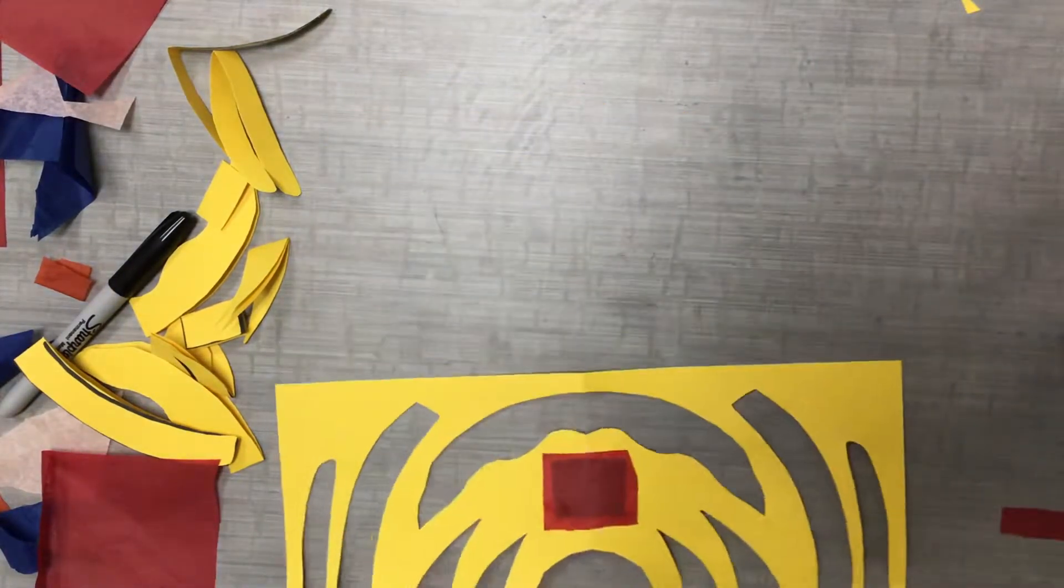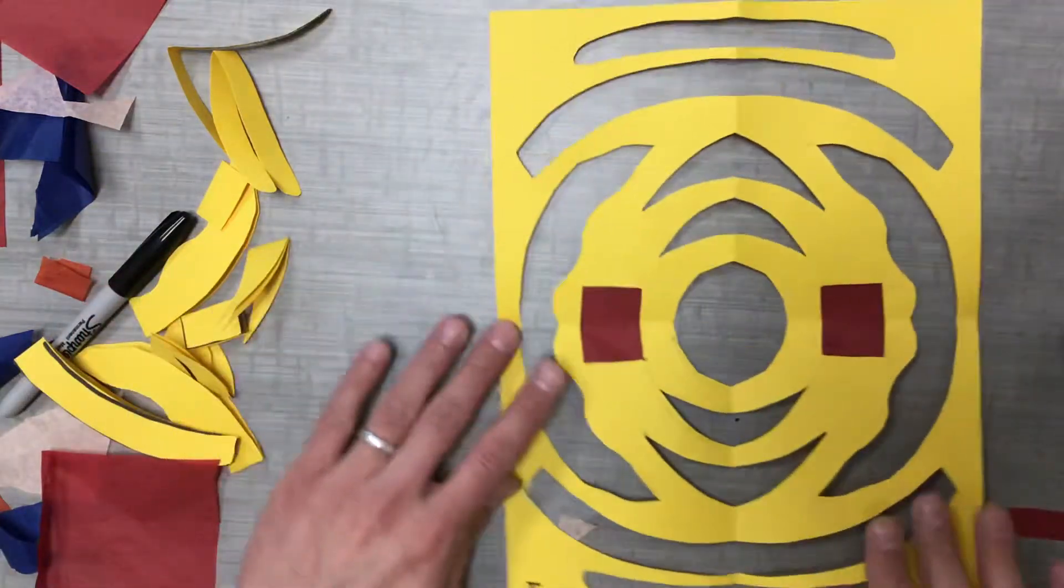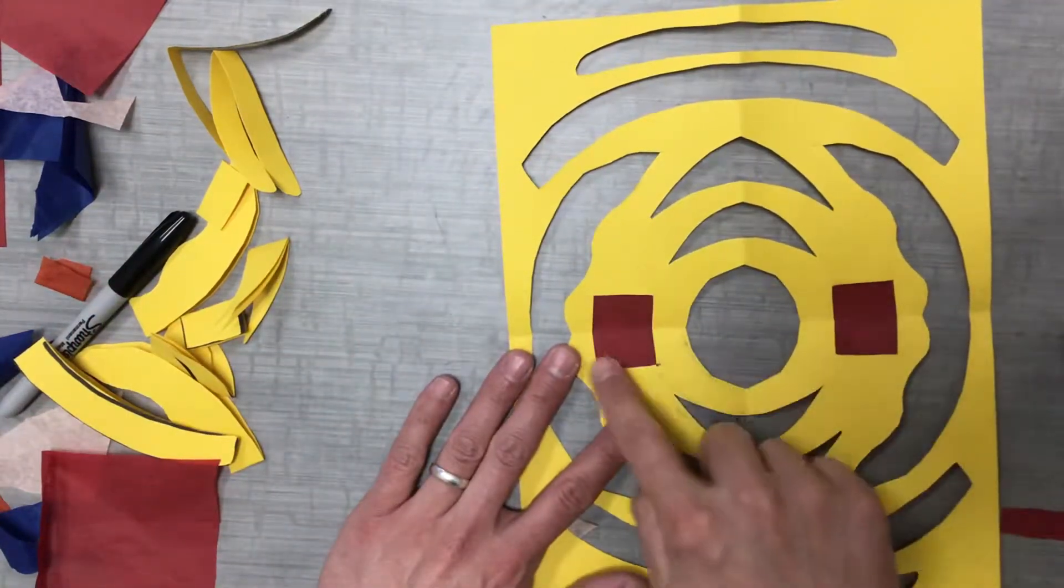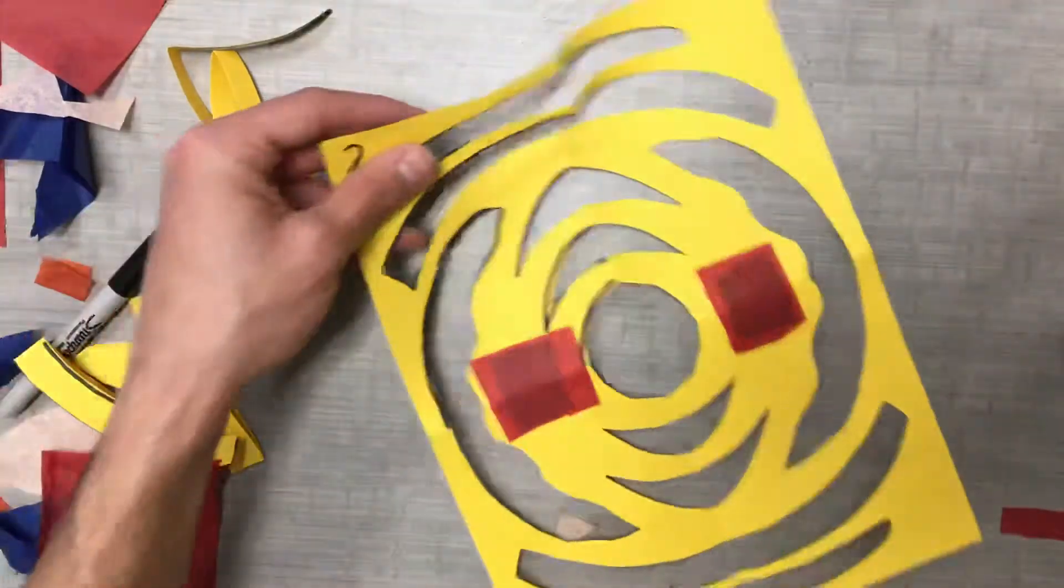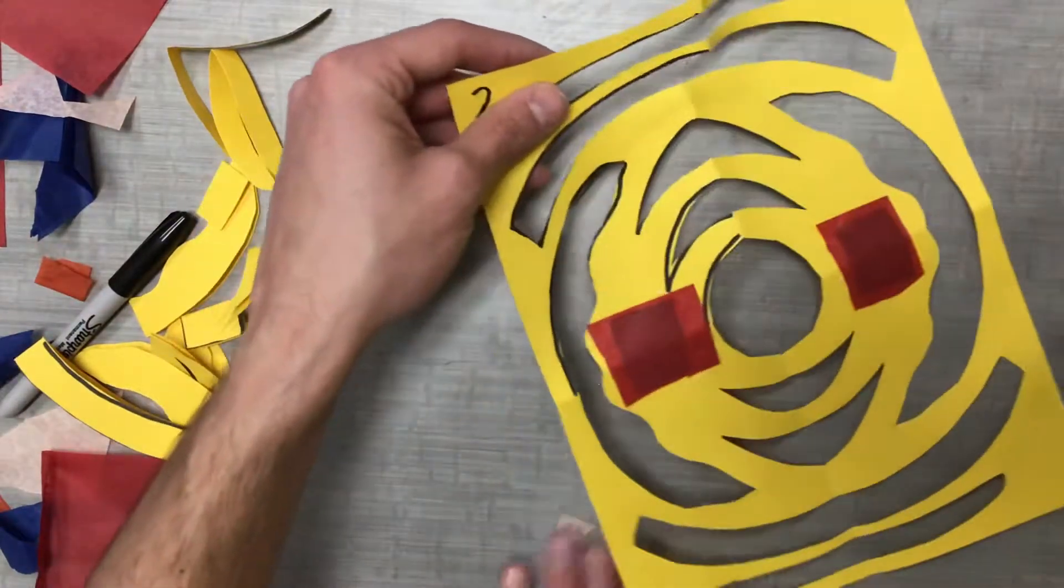So I've covered up both these squares. Let's look and see what it looks like on this side. So you can see that it looks really nice where these squares are. But on the back side it's a little ugly. That's okay. We're not going to see the back. We're just going to see the pretty side.